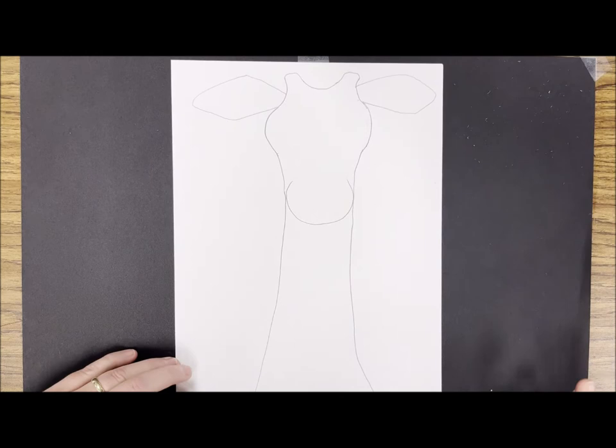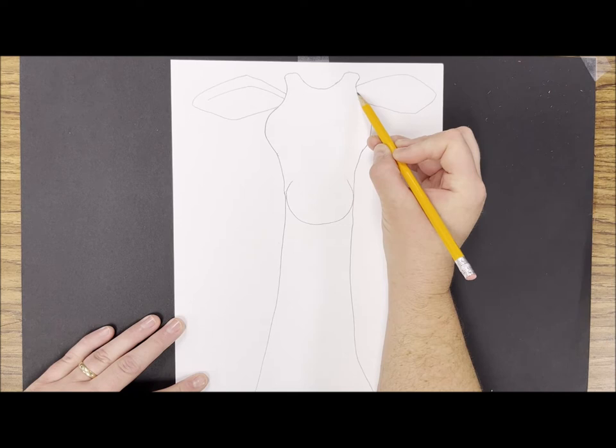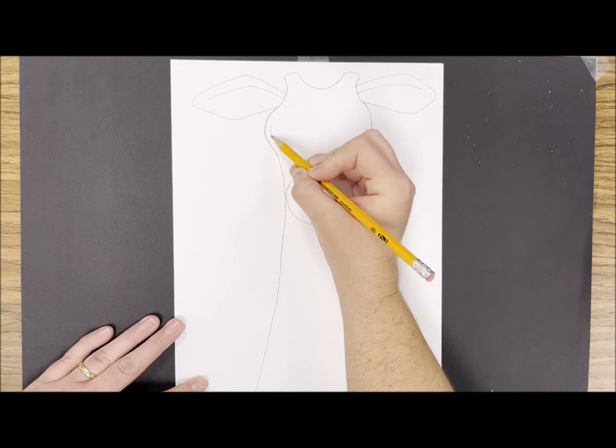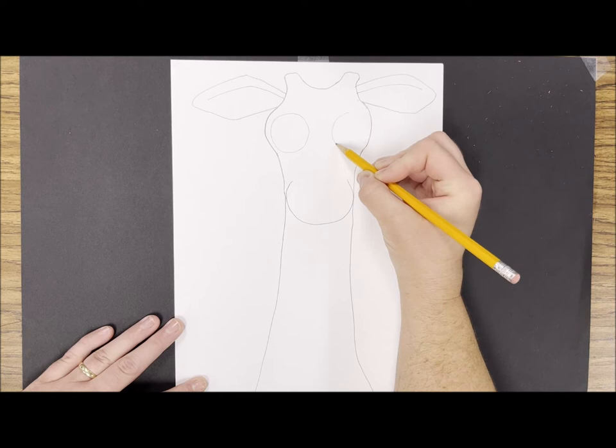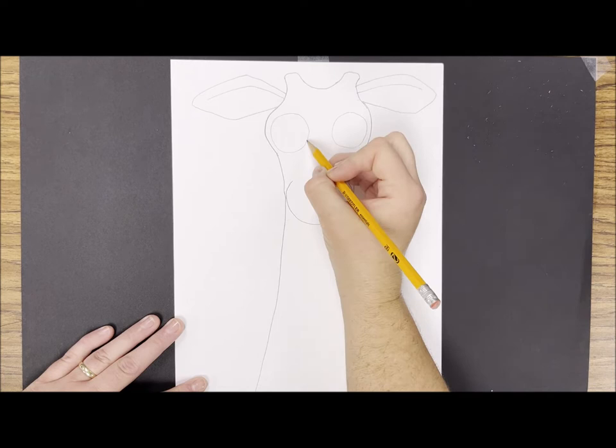Next I'll add a little line inside of each ear and then I'm going to draw big circles for each of the eyes. Inside of each eye I'll draw another smaller circle for the pupil.